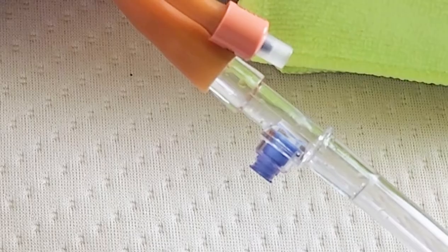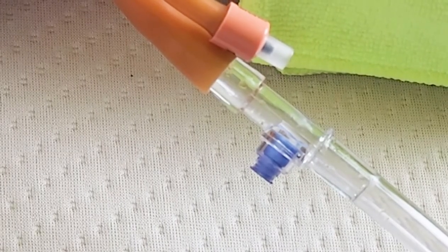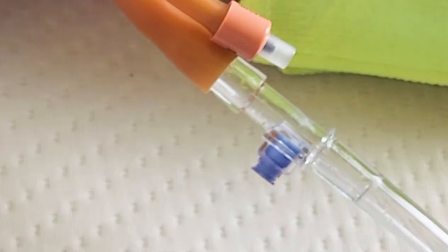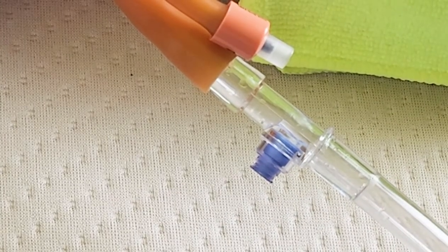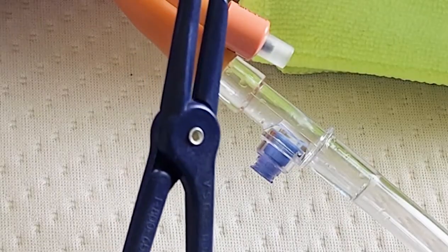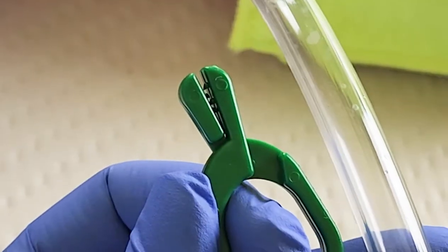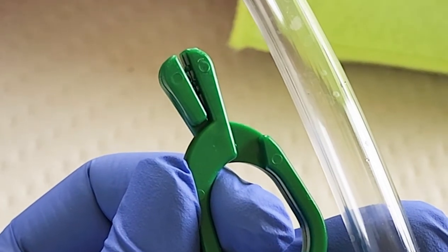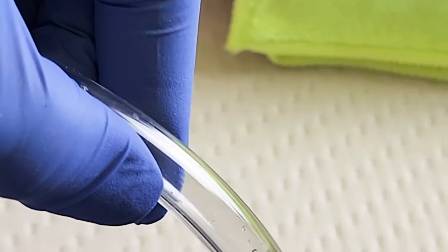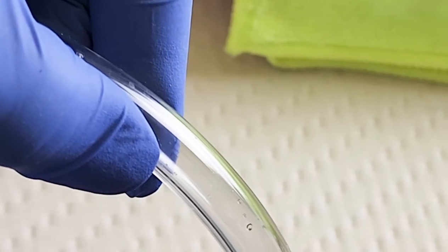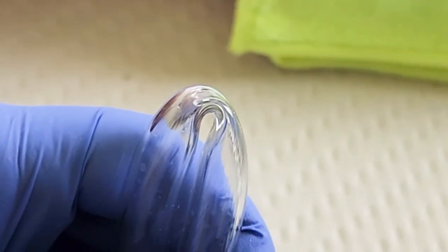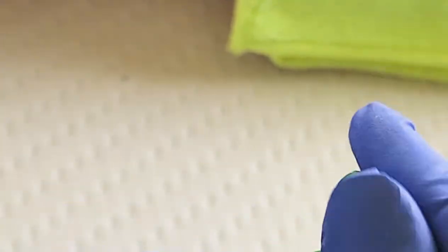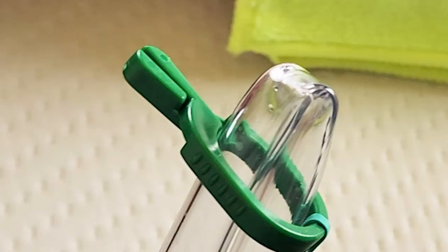Now, you can use a rubber band to occlude the tubing. You can also use these non-sharp tubing clamps, or you can use the clamp right on the actual Foley catheter tubing. Now, you're going to occlude the actual tubing. It's going to look like this. Then, you're going to take this green plastic and you're going to apply it like that.